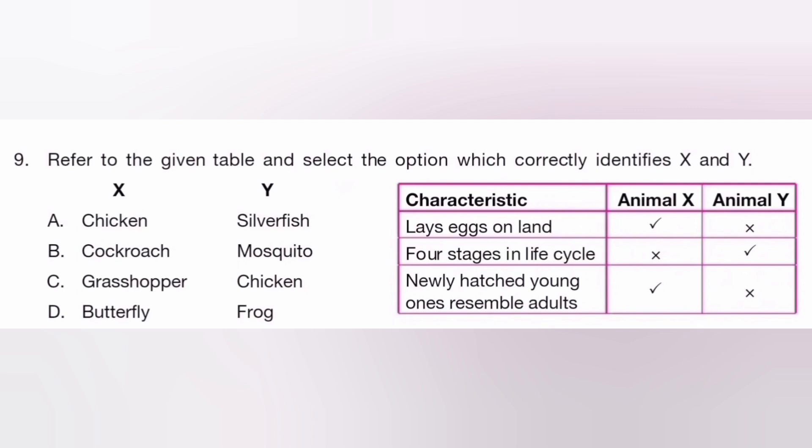Refer to the given table and select the option that correctly identifies X and Y. The answer is B.